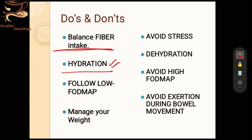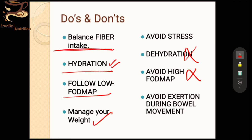Hydration is key — whether you are constipated or have chronic diarrhea, hydration is very important. We will follow a low-FODMAP approach and avoid high-FODMAP foods, which we'll cover in the next few slides. We also need to manage our weight so that excess weight around the pelvis or abdomen doesn't put pressure on the pelvic floor muscles or restrict blood flow. If underweight, we must increase diet intake while keeping symptoms controlled.